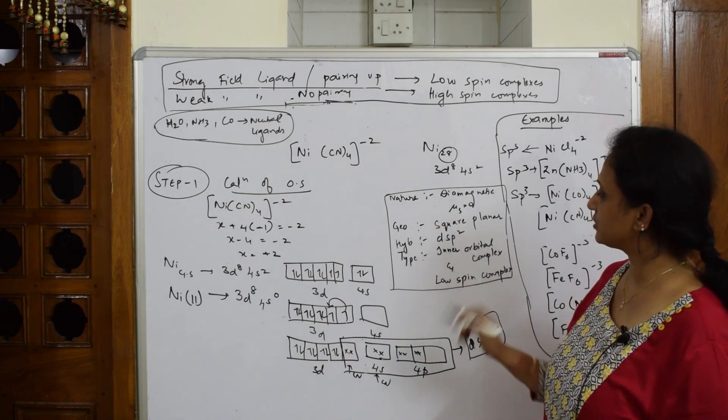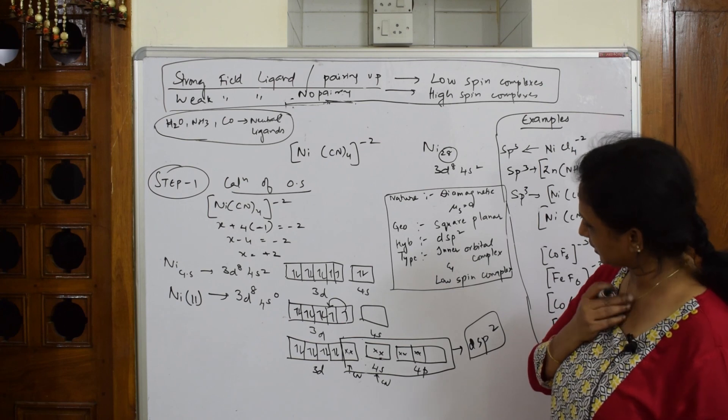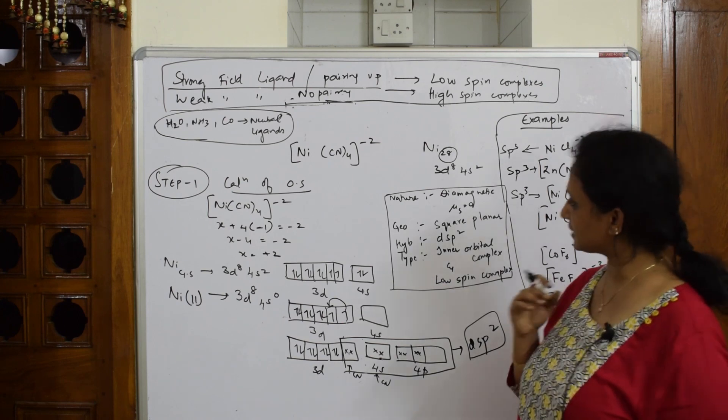So everything is over. Anything else is left? Nature is done, geometry is done, hybridization is done, type is done. Anything else? Yes, so everything is covered clearly.